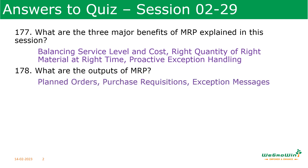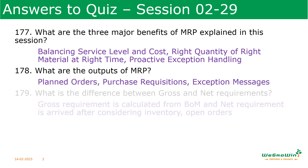What are the outputs of MRP? Any MRP will give an output of planned orders to produce the products, purchase requisitions to purchase the products, and exception messages to handle any deviations.